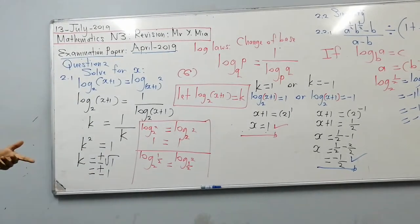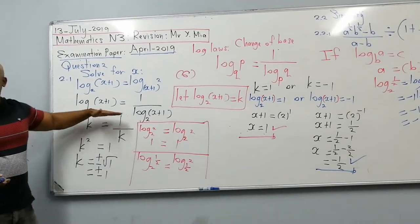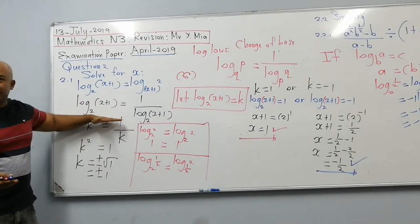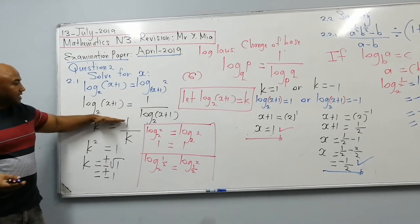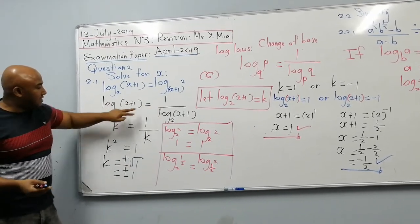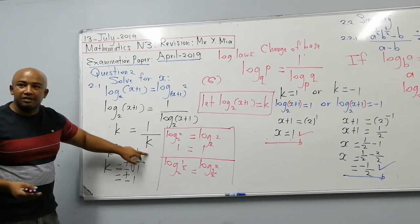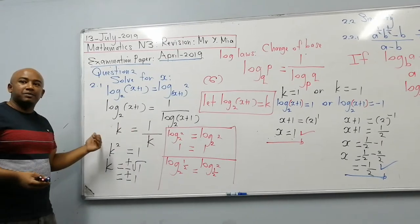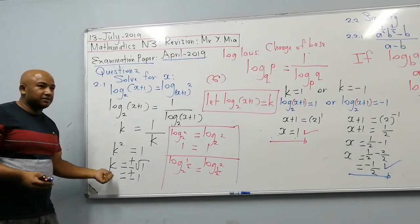So for this 6-mark question, the trick is at the beginning: change of base, use a substitution, and it becomes a simple quadratic equation.